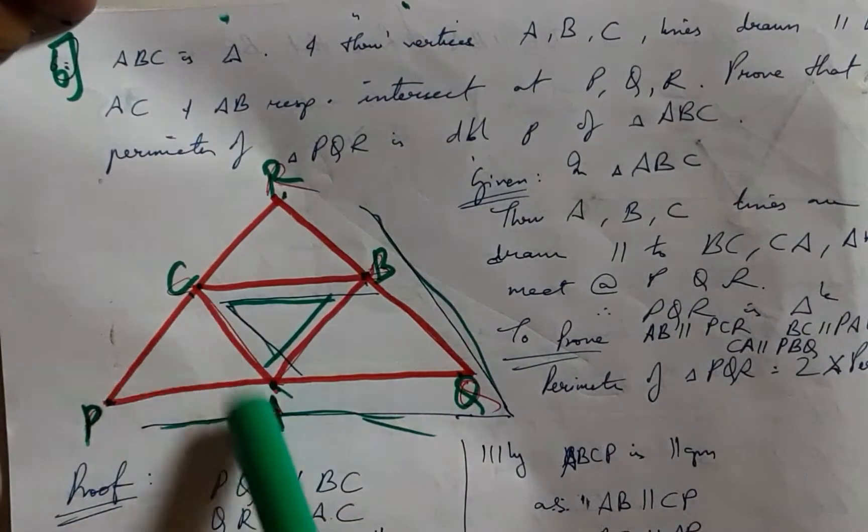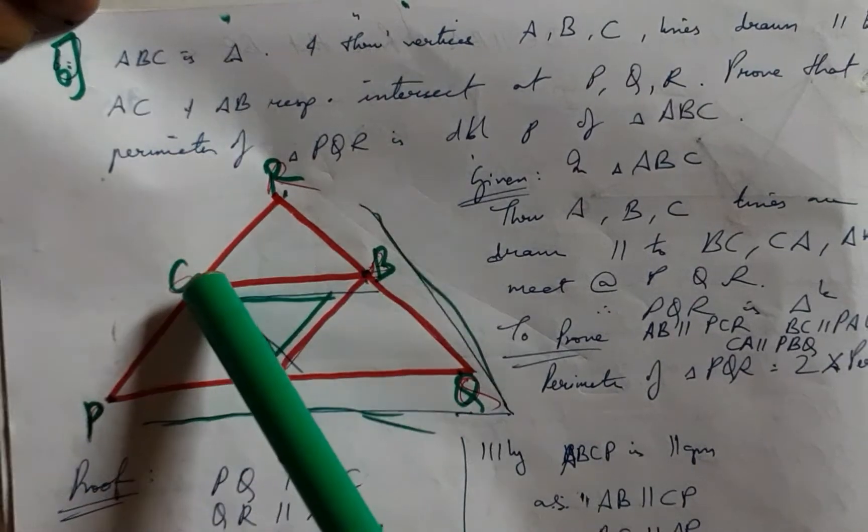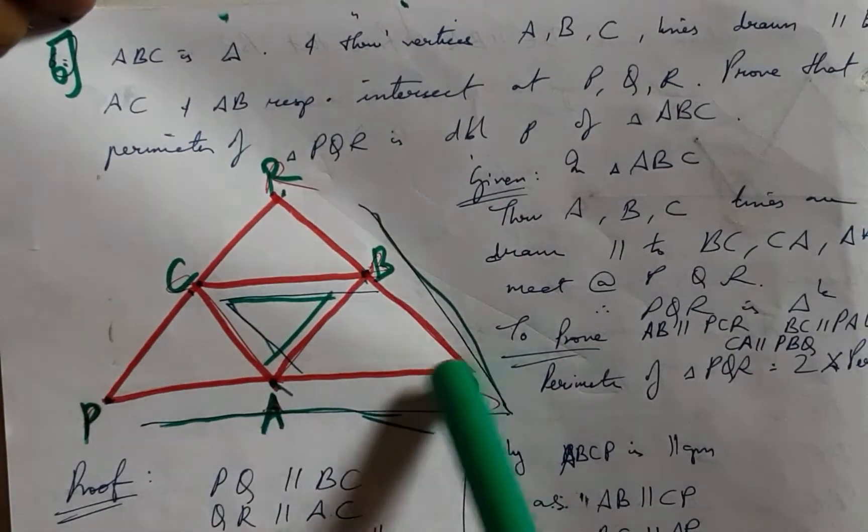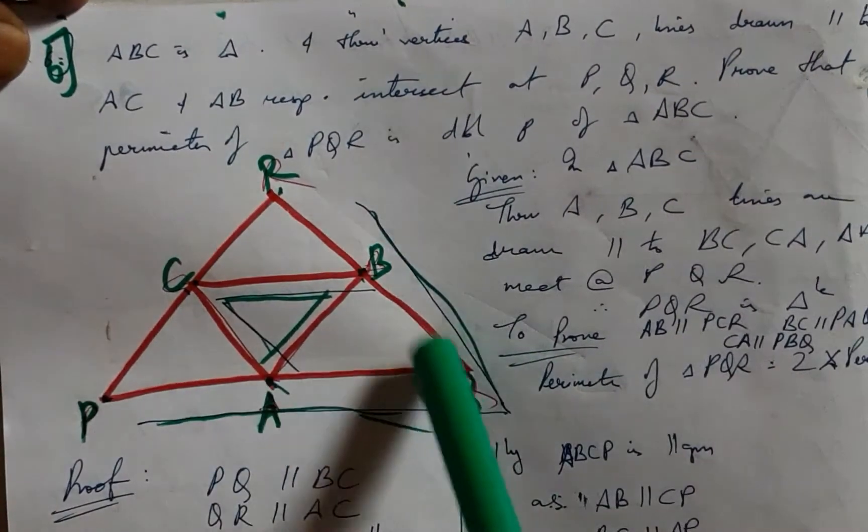The sixth problem: ABC is a triangle and through the vertices A, B, and C, lines are drawn parallel to BC. One line is drawn parallel to AB, and another line is drawn parallel to AC.